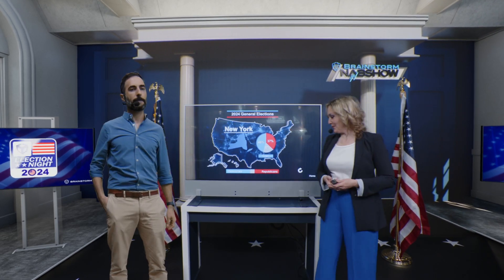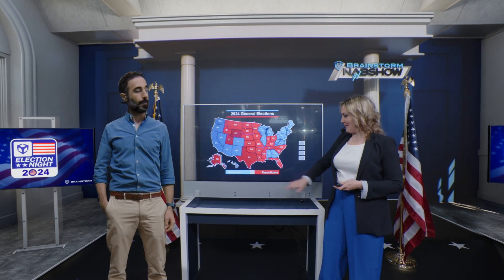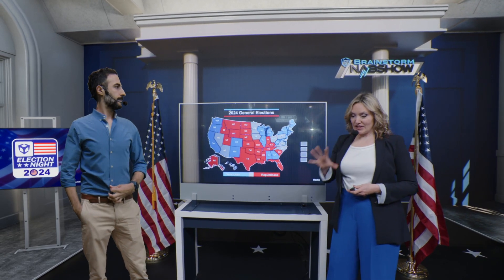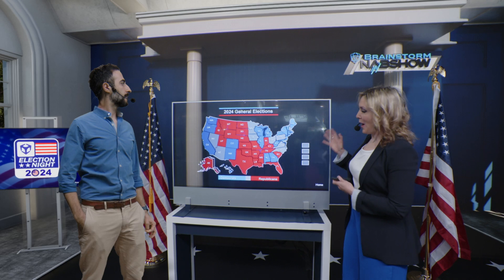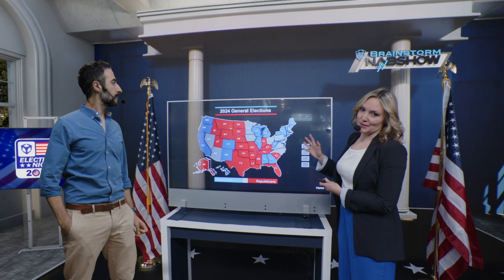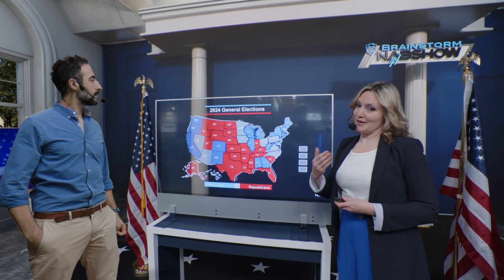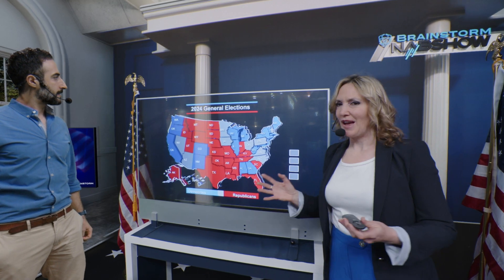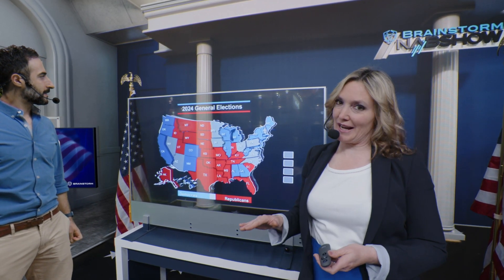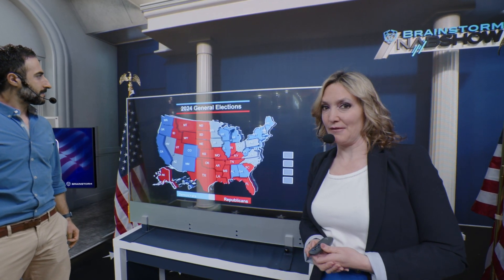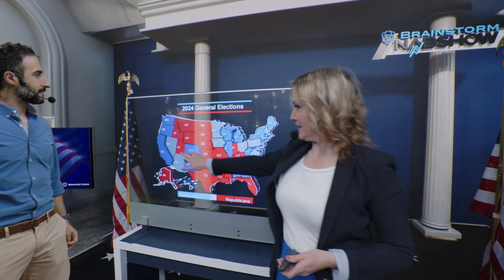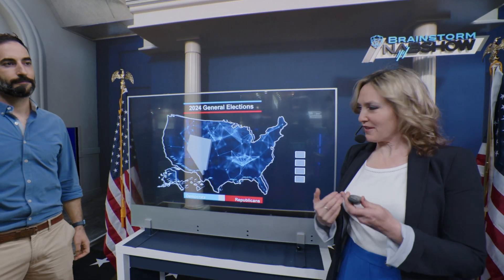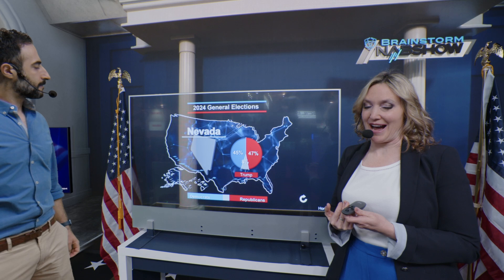Of course we can. Going back to our map here, the states which are marked in grey are our battlegrounds. We have Nevada, Arizona, Minnesota, Virginia — these are the states in which there is no clear winner yet. Take here in Nevada, for instance, where both candidates are nearly evenly matched.